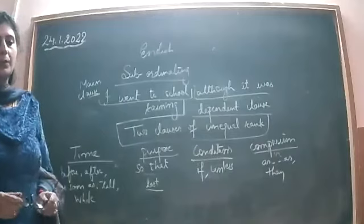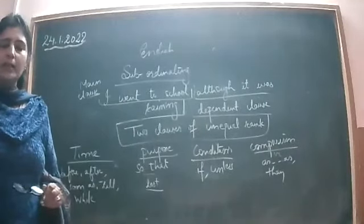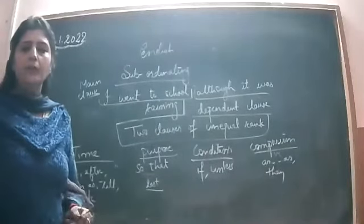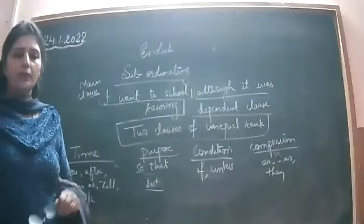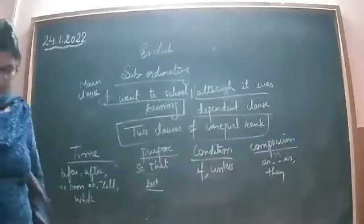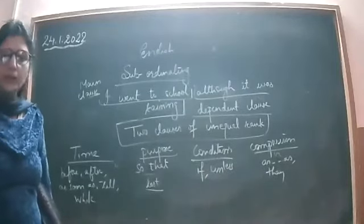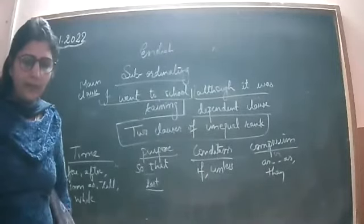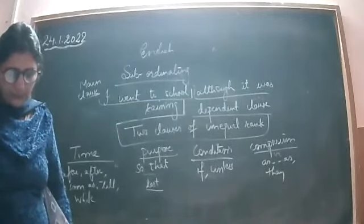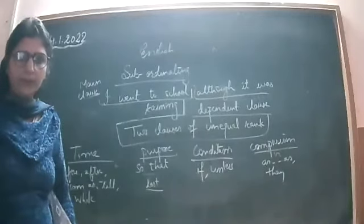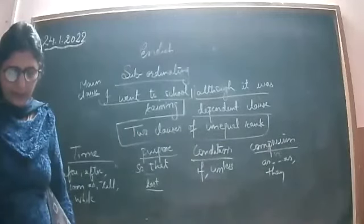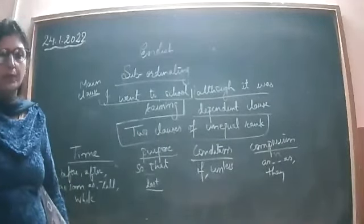Now open up your grammar books. I told you to do the first exercise, so let us check what you have written and where you are wrong. On page 106, part A: underline conjunctions and state whether they are single, compound, or correlative.